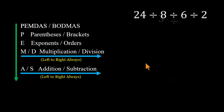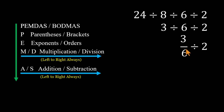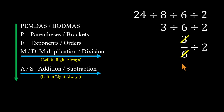Let's go step by step. Start from the left: 24 divided by 8 equals 3. Bring down the next number — the expression becomes 3 over 6, divided by 2. Cancel the factor of 3 on top and bottom, leaving 1 half.